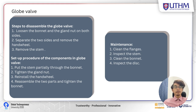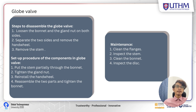For the globe valve, the steps to disassemble are: loosen the bonnet and gland nut on both sides; separate the two sides; remove the handwheel; and remove the stem. To reassemble: put the stem partially through the bonnet; tighten the gland nut; reinstall the handwheel; and reassemble the two parts and tighten the bonnet. To maintain a globe valve: clean the flange, inspect the stem, clean the bonnet, and inspect the disc.